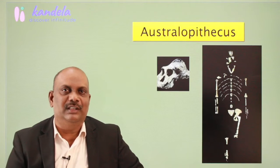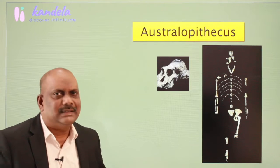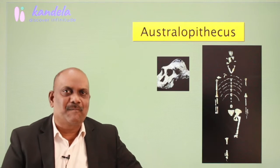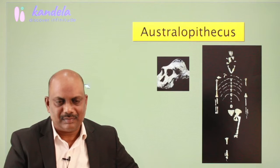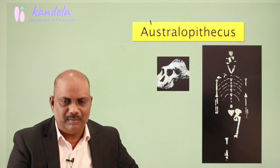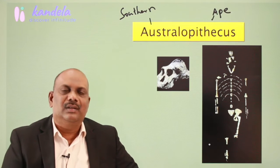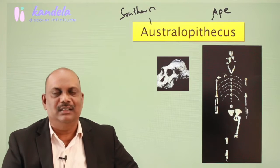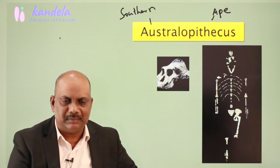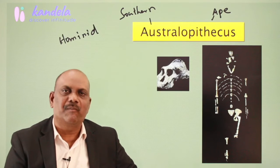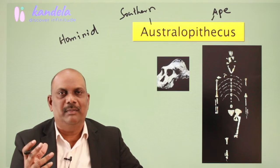Hello and welcome to this lecture in anthropology. This lecture is about Australopithecus. In Greek, 'Australo' means southern and 'pithecus' means ape, so Australopithecus means the southern ape — the ape from the southern hemisphere. Australopithecus includes a collection of hominid species; we human beings belong to the family Hominidae.